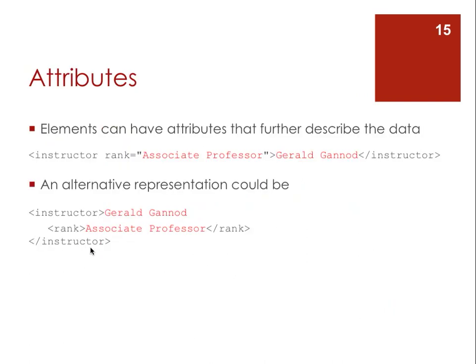Attributes are a way to further describe data being contained within tags. For example, you could have a rank attribute within an instructor tag to describe the content — so the instructor is 'Gerald Gennad' and the attribute rank would be 'associate professor.' This is an alternative representation to having a child tag nested within the instructor element. It really depends on the creator of the XML schema as to whether it should be structured one way or the other.